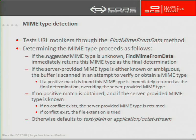The key step is when the server provides a content type and the findMIME from data function is not able to determine the real content type. So when there is no conflict, the browser will be forced to render the content as if it is the content type supplied by the server itself.